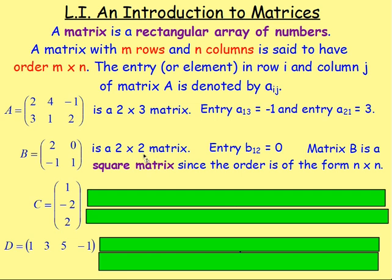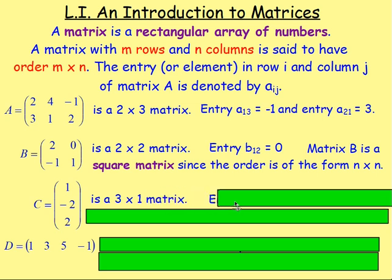Matrix B has a special name. It is called a square matrix since the order is of the form N by N — basically these numbers are the same. Matrix C — what would the order of that be? That is a three by one matrix.